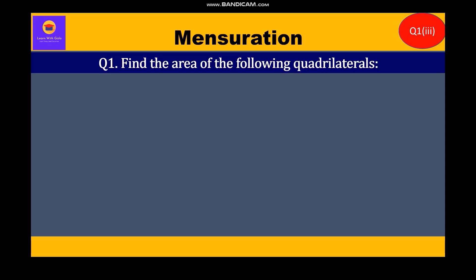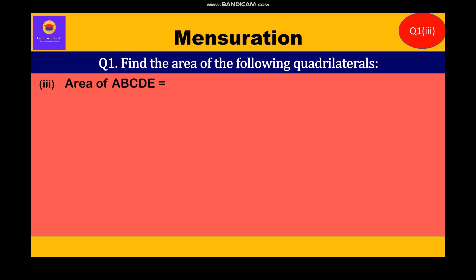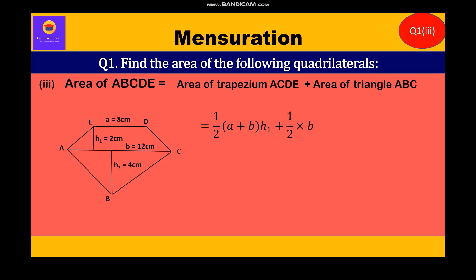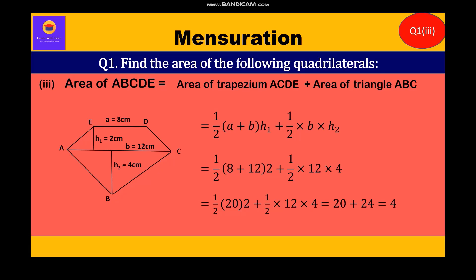Now let's move to the third part. We have to find the area of the given figure ABCDE. This entire figure can be divided into two parts: the first part is the trapezium and the second part is the triangle. So we find the area of trapezium plus the area of triangle. Using the formulas, we get half in bracket 8 plus 12 into 2 plus half into 12 into 4, which simplifies to half into 20 into 2 plus half into 12 into 4, giving us 20 plus 24, which is equal to 44 centimeter square.